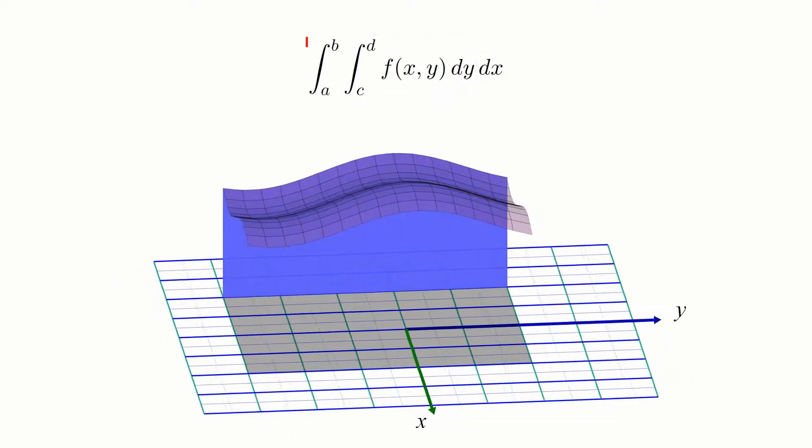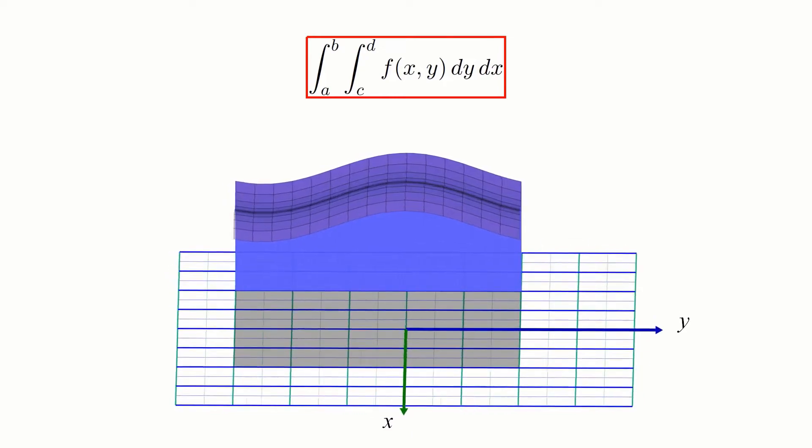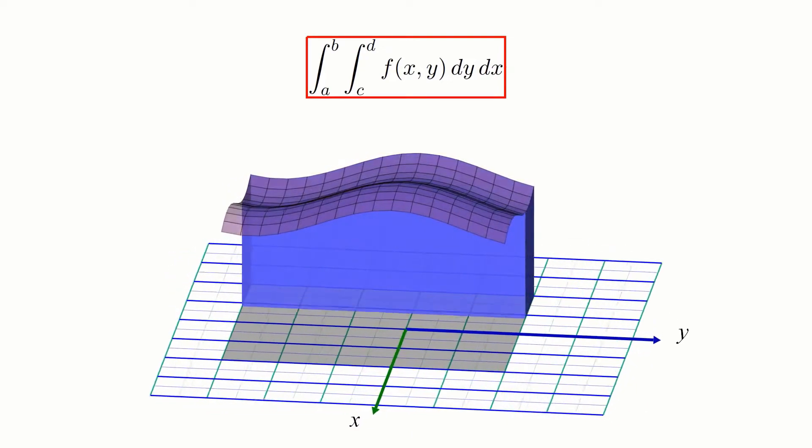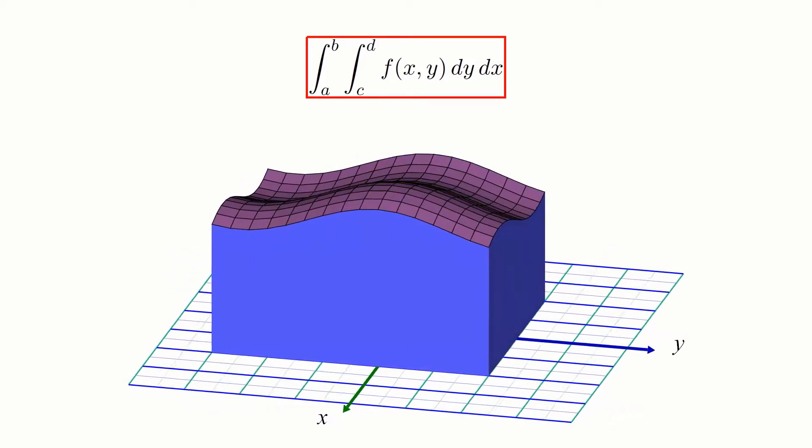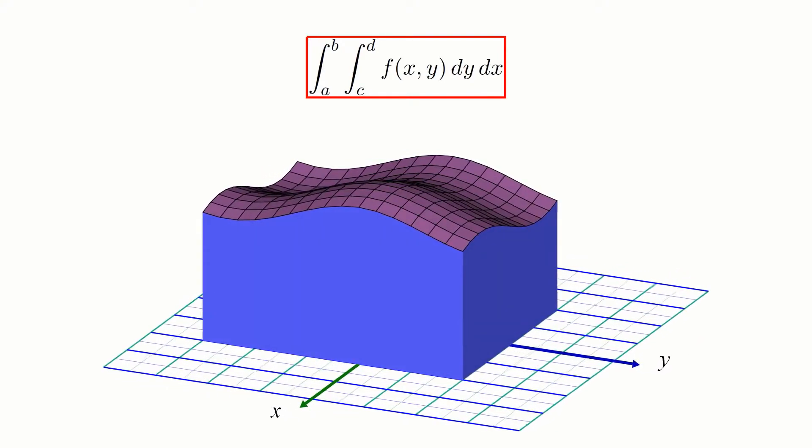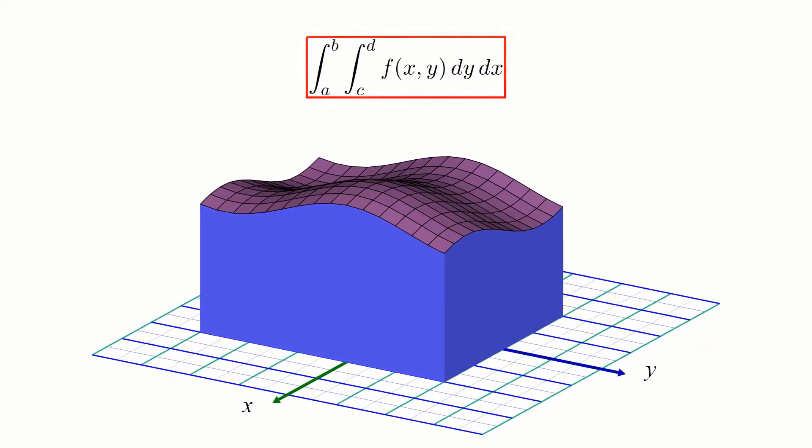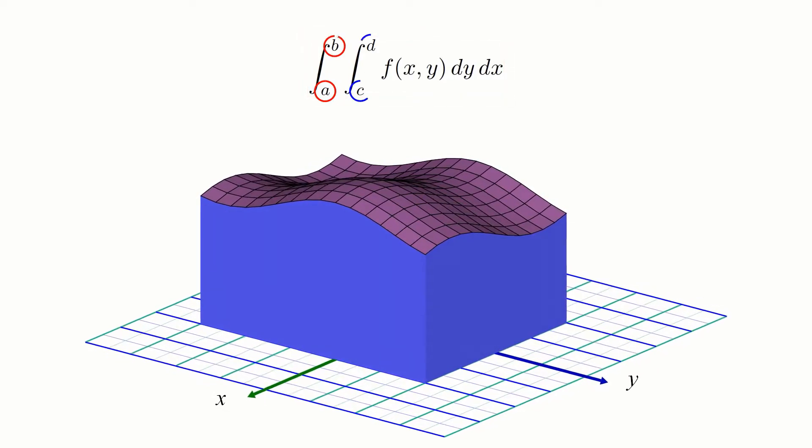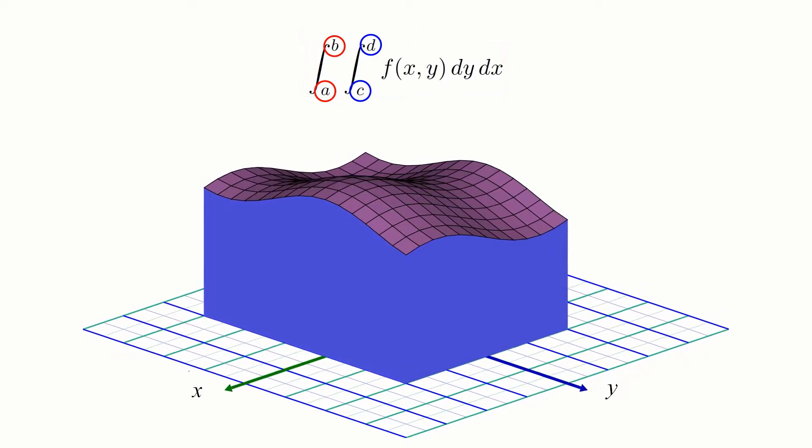Once this is done, the outer integral is responsible for taking this slice and sweeping it along the other axis in order to carve out the solid whose volume you want. Also note that the bounds of each integral reflect the extents of the sweeping motions in each direction.